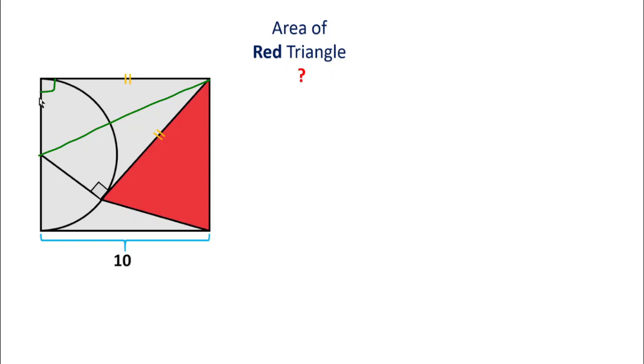How? You can see this is the square's side length, whose value is 10. So this should be 5. And this is the radius, so it should also be 5. And this is 10. According to the question, the side length of the square equals the side length of this triangle, so it is also 10.